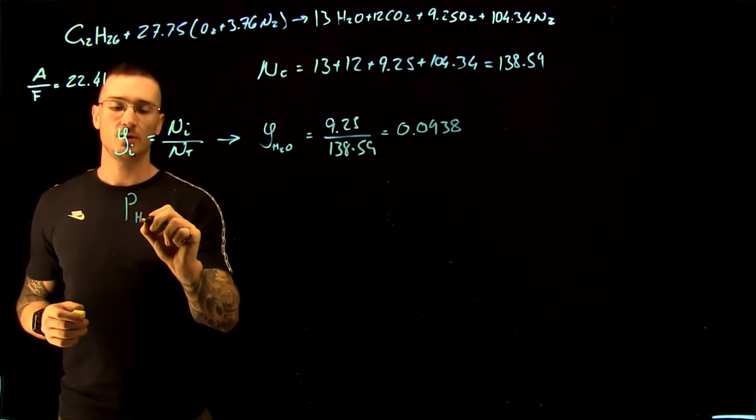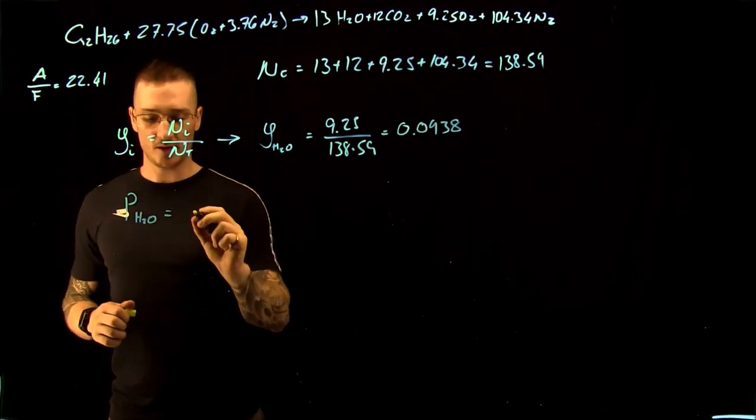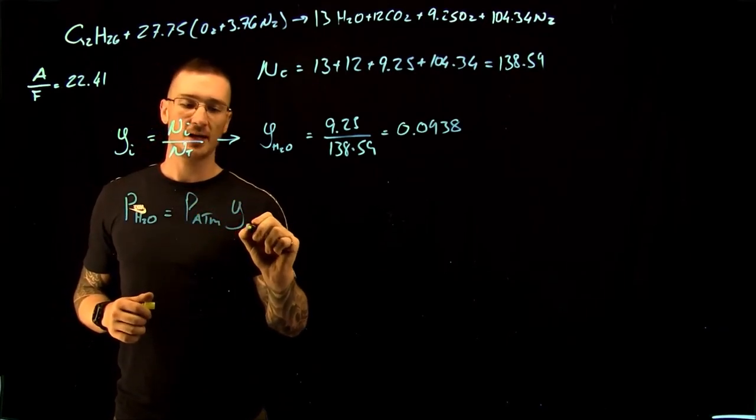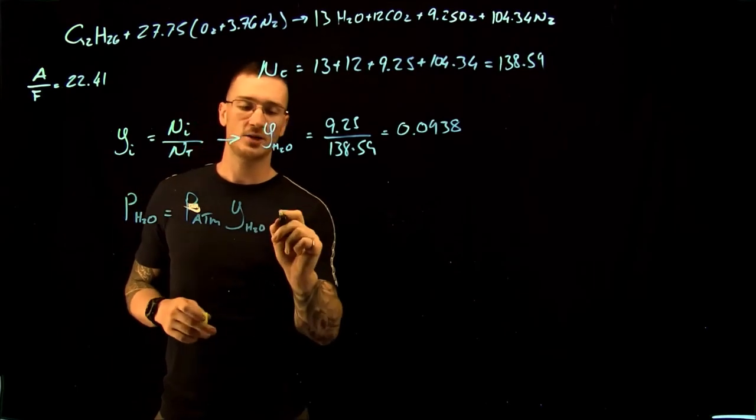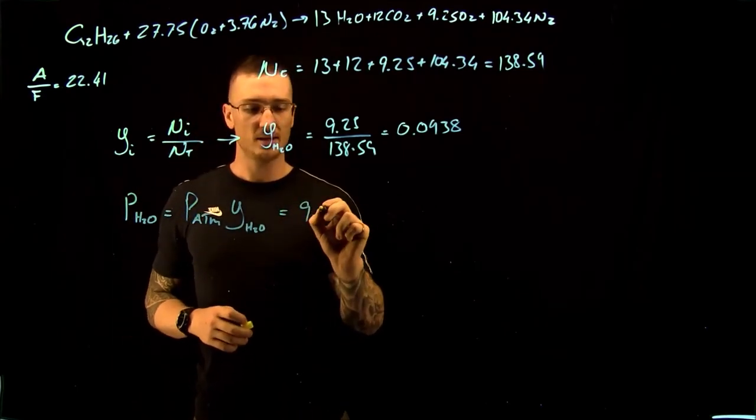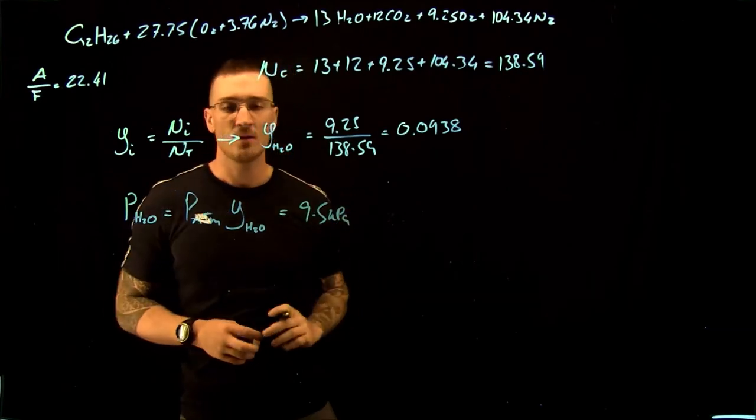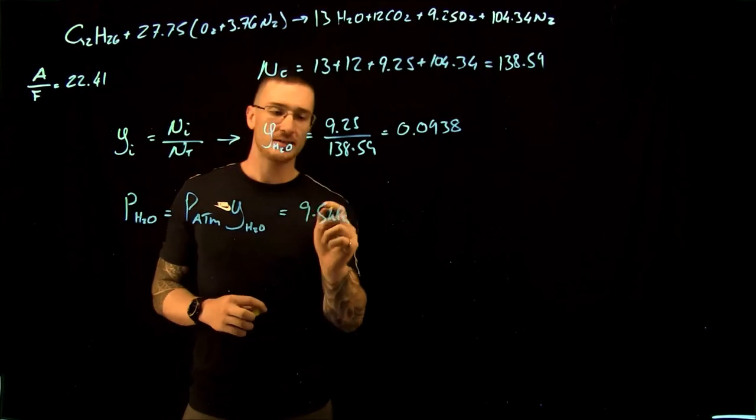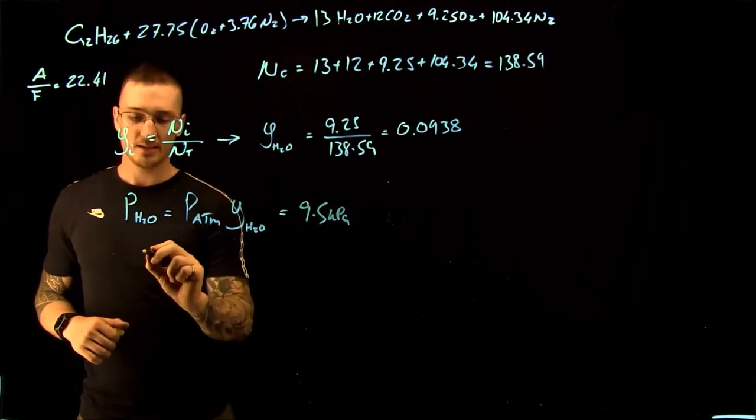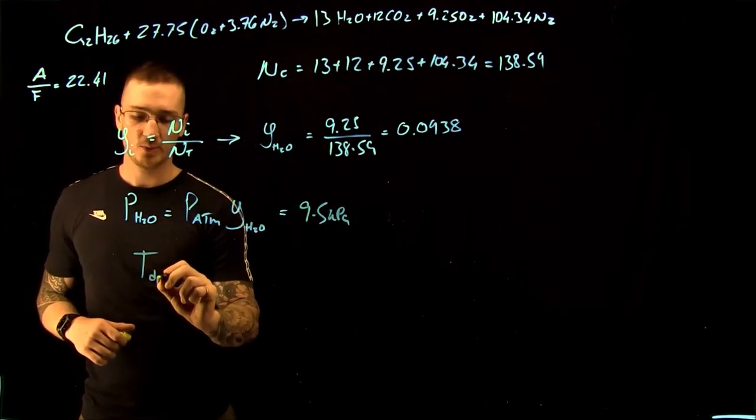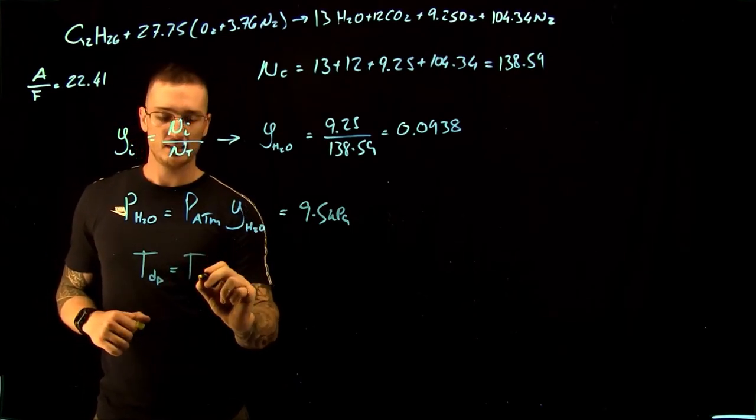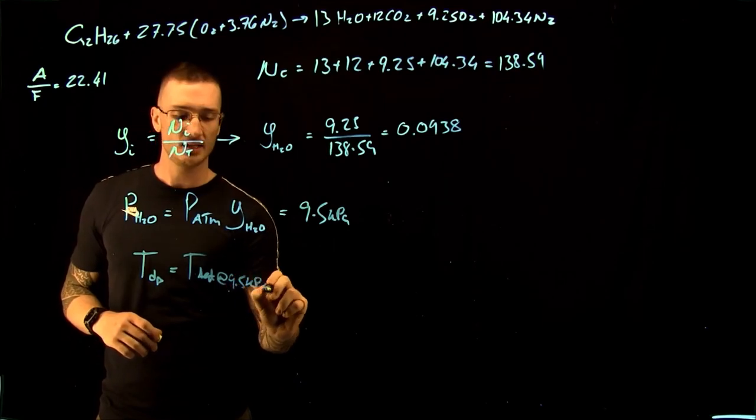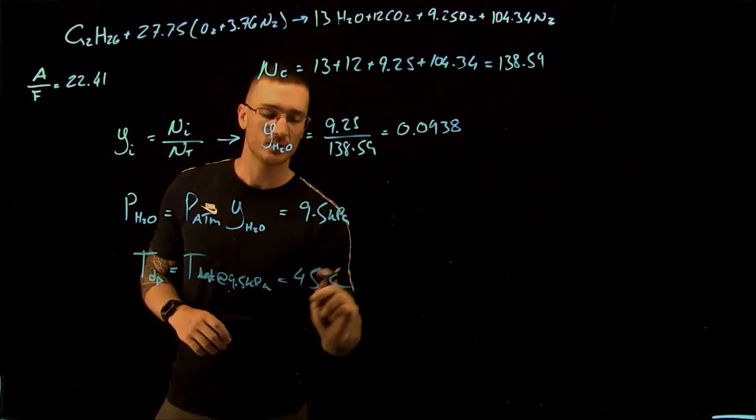So the partial pressure of H2O is equal to our atmospheric pressure times its mole fraction of H2O, which gives us 9.5 kPa. We then go to our saturated mixture tables, look at the saturated temperature at 9.5 kPa, and we get that the temperature for dew point is equal to the T sat at 9.5 kPa, which is equal to 45 degrees C.